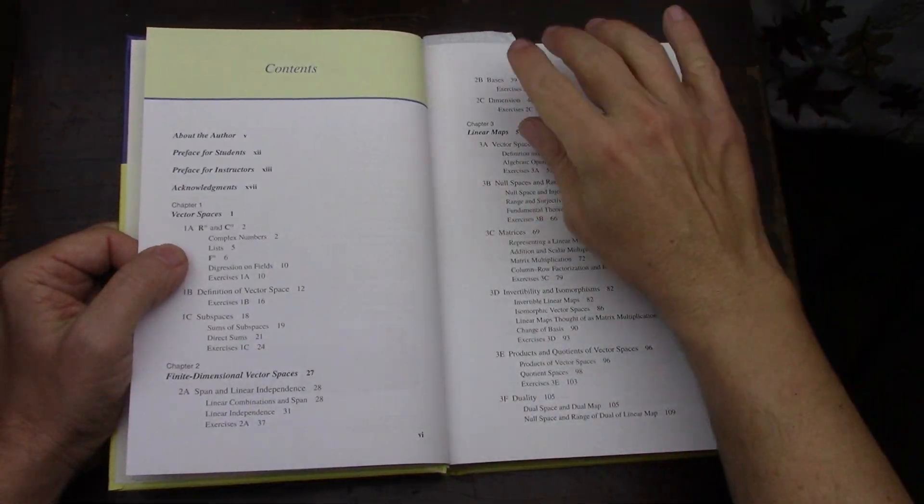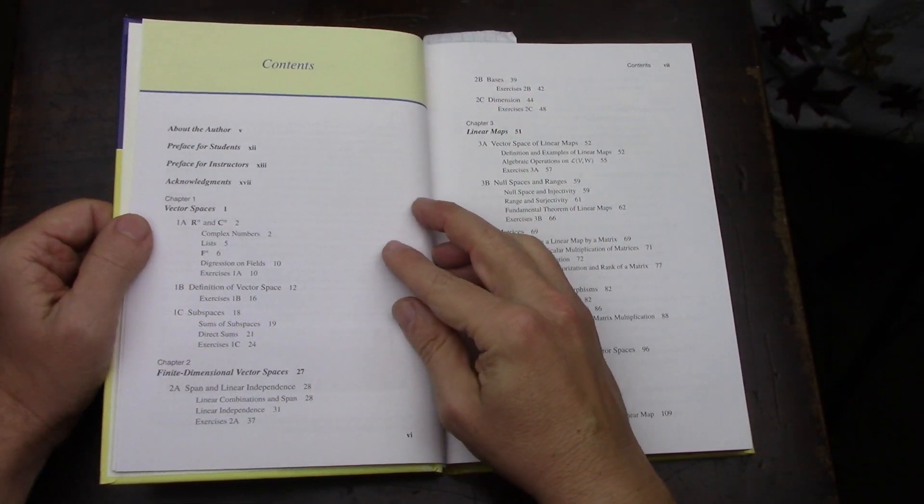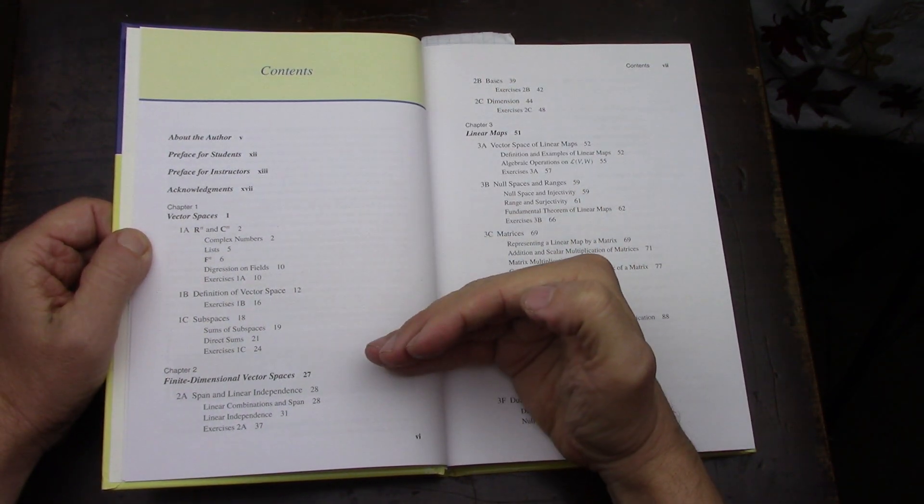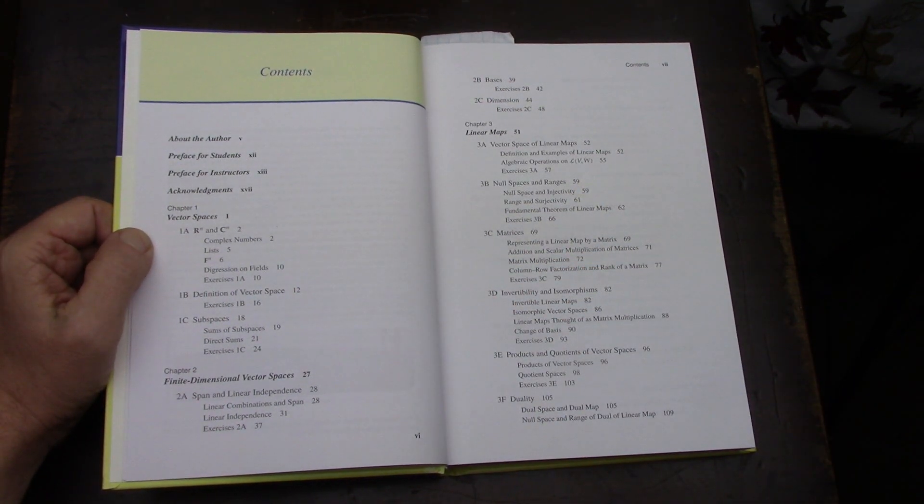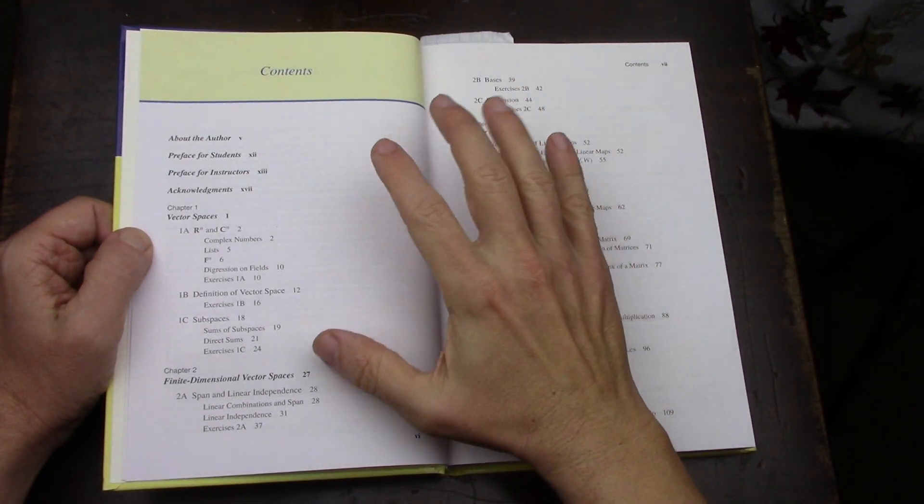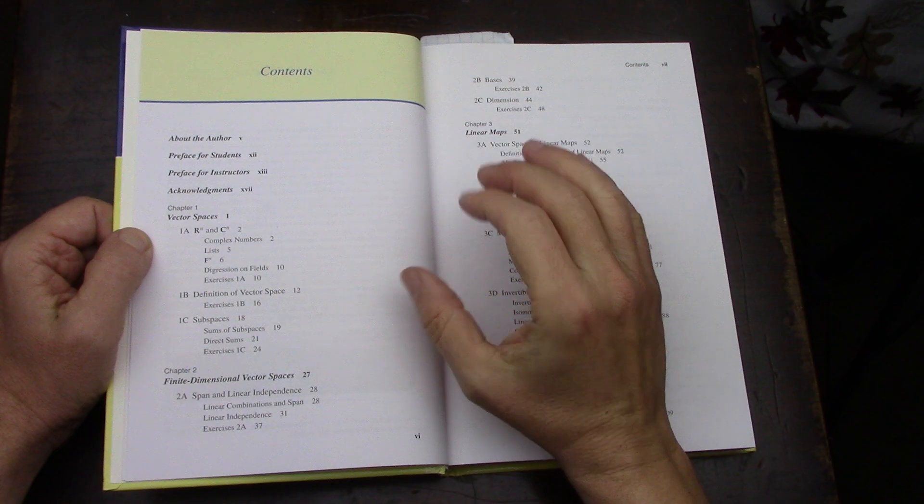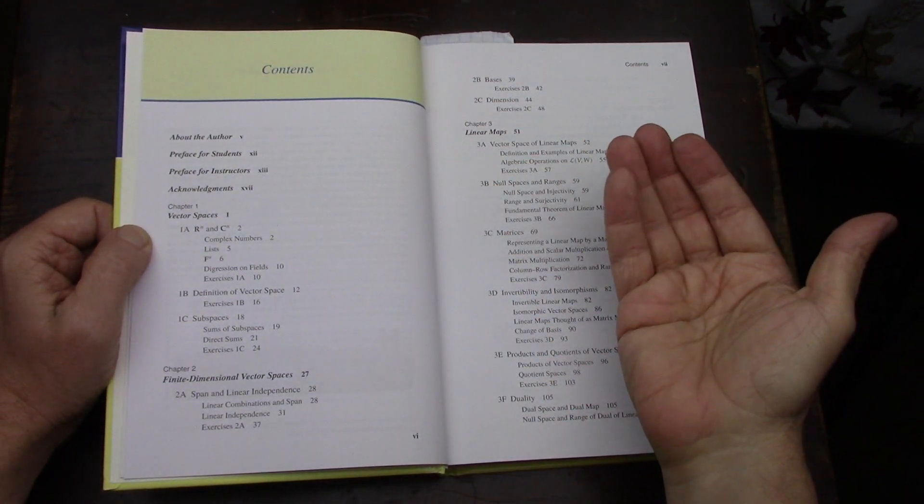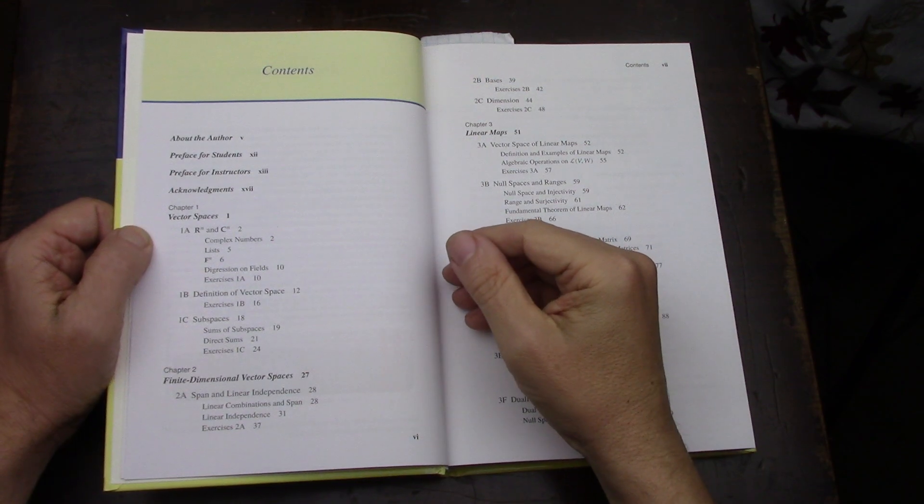This is a great book, so I want to go through the table of contents briefly. There's vector spaces, which is your standard fare for a theoretical, proof-based linear algebra book. For anybody who's never heard of this book, it's not supposed to be your first linear algebra book because it assumes you know a lot of linear algebra - it jumps right in on the deep end.